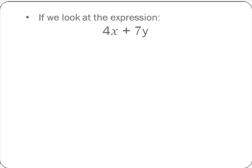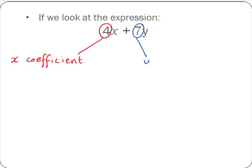Now, if we look at the expression 4x plus 7y, we look at the 4 in front of the x. The 4 in front of x means 4 multiplied by x, and the 4 in this case is called the x coefficient because it is multiplied by the x. Similarly, 7 is called the y coefficient because it is multiplied by the y.